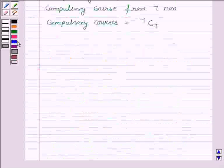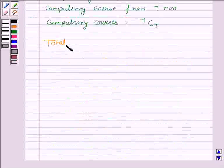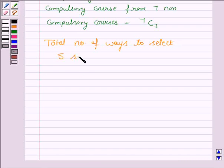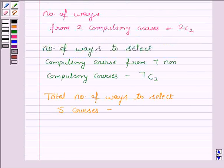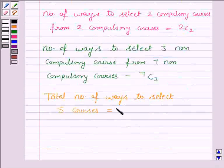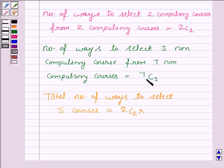Now, the total number of ways to select 5 courses is equal to the number of ways to select 2 compulsory courses, that is 2C2, into the number of ways to select 3 non-compulsory courses.